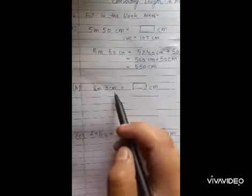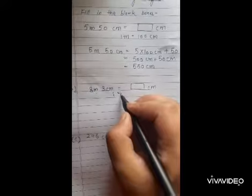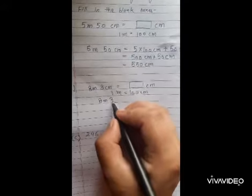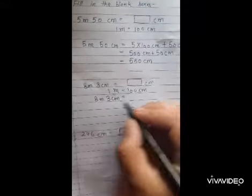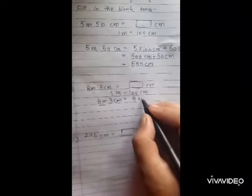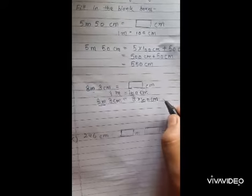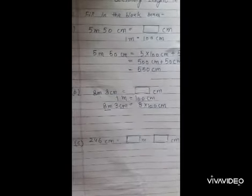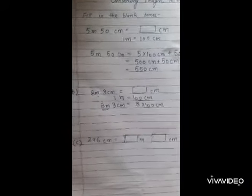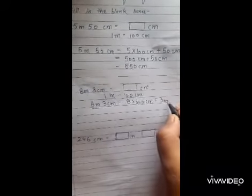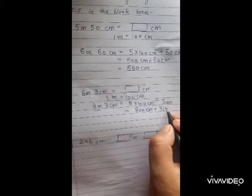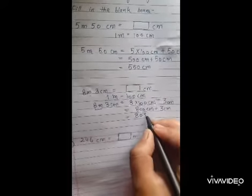Here again we have to convert 8 meter 3 centimeter into centimeter. As we know, 1 meter equals to 100 centimeter. So for 8 meter 3 centimeter: 8 is in meter, so we will convert it into centimeter — that is 800. We multiply 8 by 100. Then we will add 3 centimeter. That is 800 centimeter plus 3 centimeter, which equals 803 centimeter.